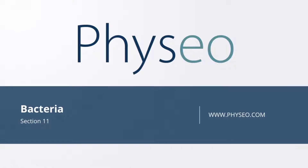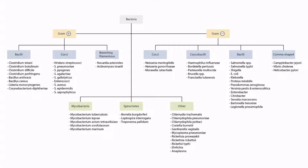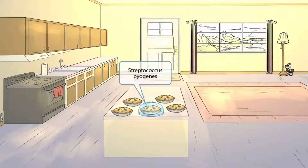Welcome to section 11 of Bacteria. This is our bacteria overview figure, and in this video we'll be discussing Streptococcus pyogenes, which you can see right here. This scene will take place in someone's home as they prepare for a nice Thanksgiving meal. Most people eat pie on Thanksgiving, so we'll show a delicious looking pie front and center. Pie sounds kind of like pyogenes, so this will be our symbol for Streptococcus pyogenes.